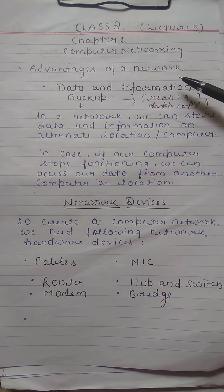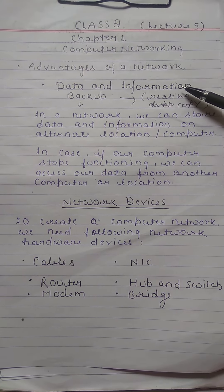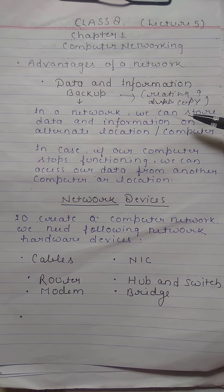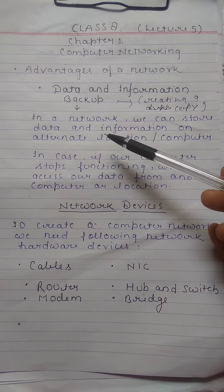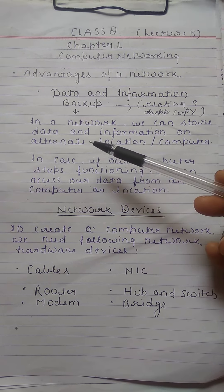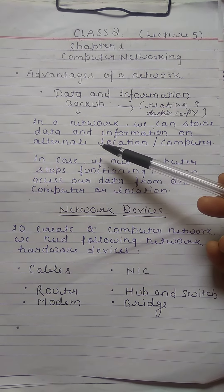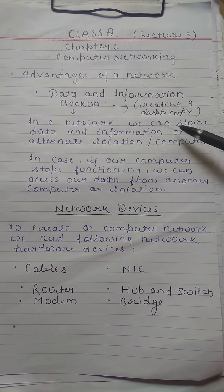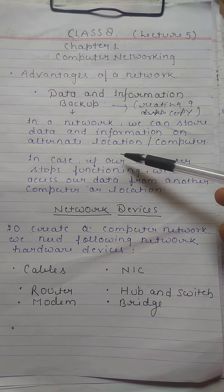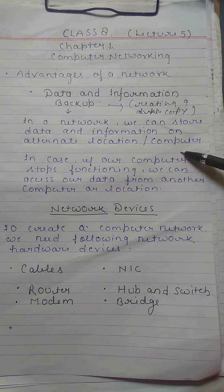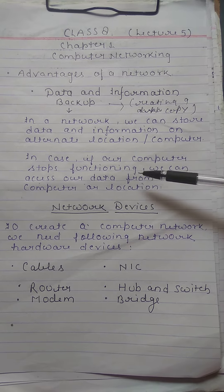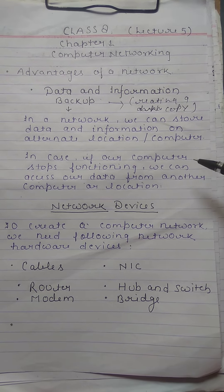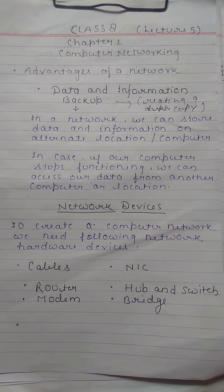The next advantage of a network is data and information backup. Backup means creating a copy at another location. We can keep our data and information at another location in a network — we can store data and information on an alternate location or computer. In case our computer stops functioning, we can access our data from another computer or location and continue to work.